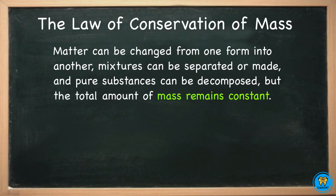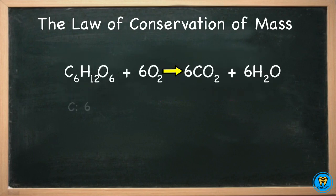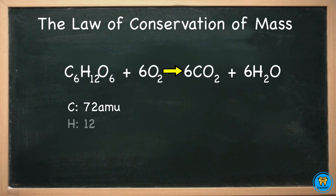We can prove it to ourselves if we go back and reference the chemical reaction for cellular respiration. On the reactant side, we have 6 carbons. You multiply that by their atomic mass unit of 12, it comes out to a total of 72 AMU. Hydrogen — we have 12 of them. Each one has an atomic mass unit of 1, so 12 times 1 is 12 AMU.